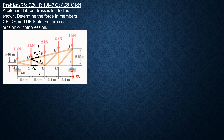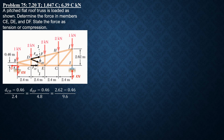To find distances CD and EF, we apply similar triangles. The equation CD minus 0.46 over 2.4 equals 0.46 over 4.8 equals 2.62 minus 0.46 over 9.6. Computing gives distance CD = 1 meter and distance EF = 1.54 meters.